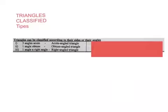If one angle is obtuse, it becomes an obtuse angle triangle. If one angle is a right angle, it's called a right angled triangle.